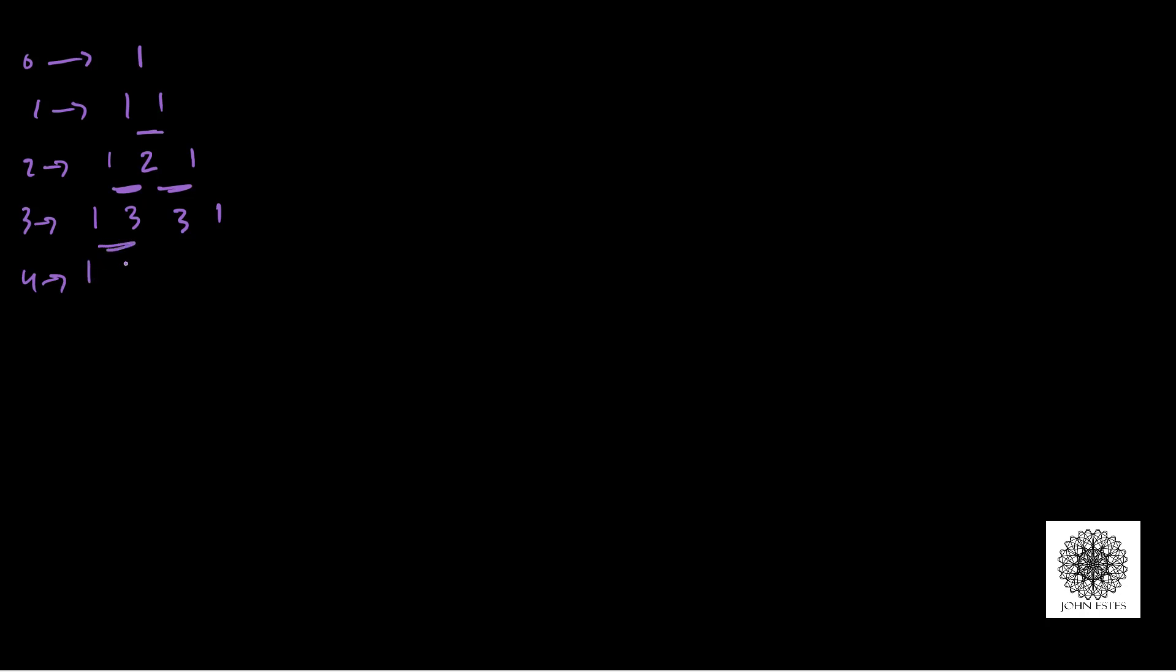The fourth row is 1, 4, 6, 4, 1. Since we're going out to the fifth power, we get 1, 5, 10, 10, 5, 1. You don't really memorize Pascal's triangle—if you're dealing with it a lot you might, but it's just really easy to come up with just like I showed you. You can go out as far as you need, and this has a lot of applications.